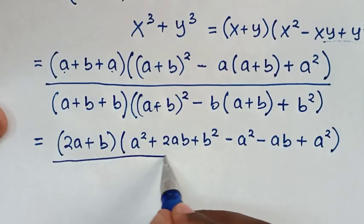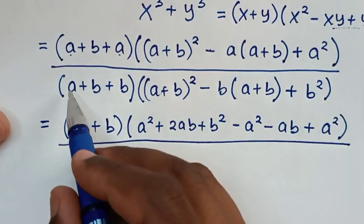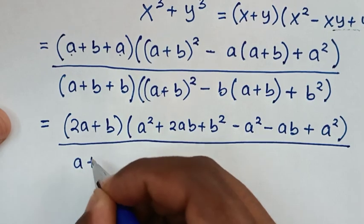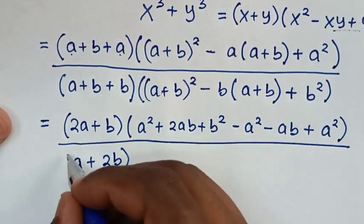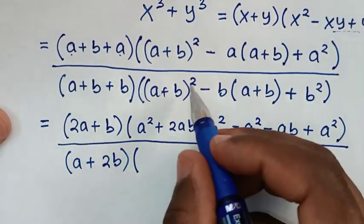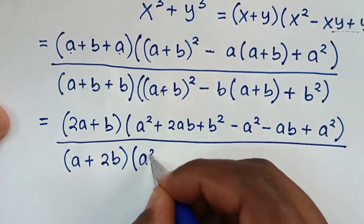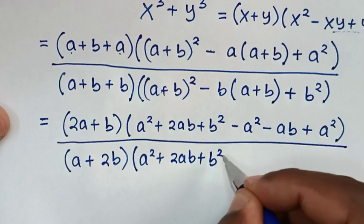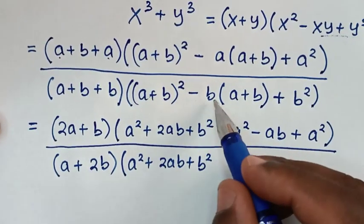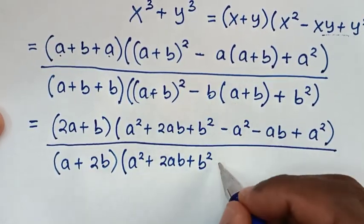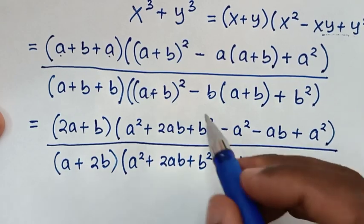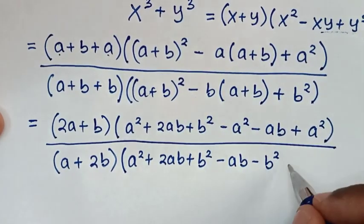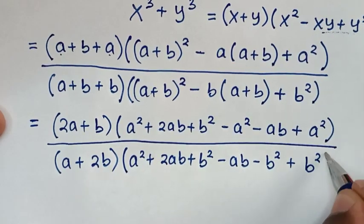Then, over. In the denominator, it is A plus 2B bracket. Then, bracket the square of A plus B is A square plus 2AB plus B square. Then, we'll take negative B inside the bracket. Negative B times A is negative AB. Negative B times B is negative B square. Then, plus this B square bracket.